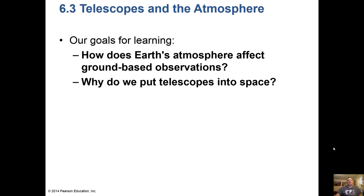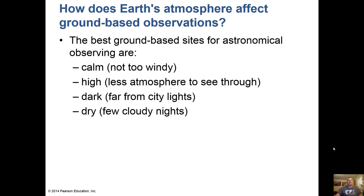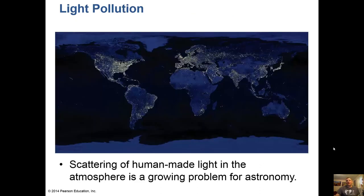Now let's look at telescopes and the atmosphere. Our goals are to understand how Earth's atmosphere affects ground-based observations and why we put telescopes in space. The best ground-based sites for astronomy are calm, high up (less atmosphere to see through), dark (far from city lights), and dry with very few cloudy nights. Most are on top of mountains. Light pollution — the scattering of human-made light in the atmosphere — is a growing problem, which is why we place more telescopes out west and on islands.